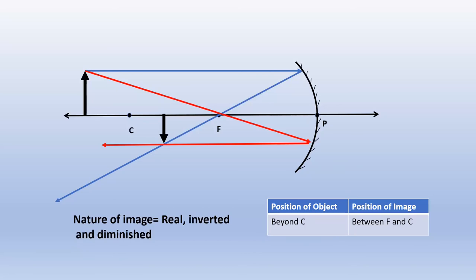Using the rules to draw ray diagrams, we can find the image formed by the concave mirror. In the next class, we will discuss various cases — that is, the object placed at different positions and the image formed.